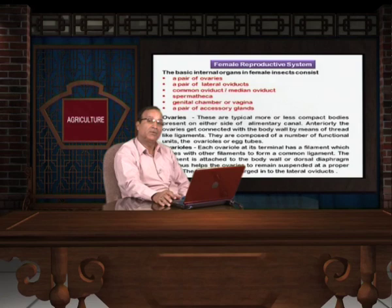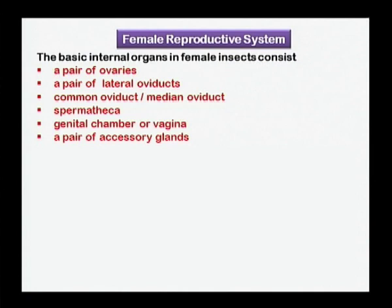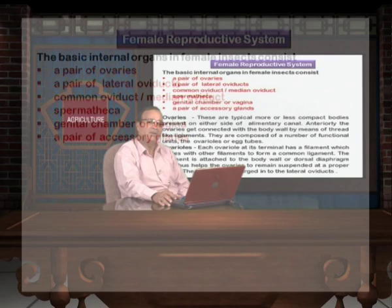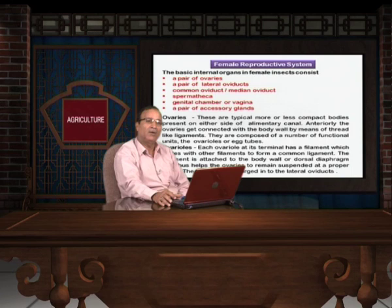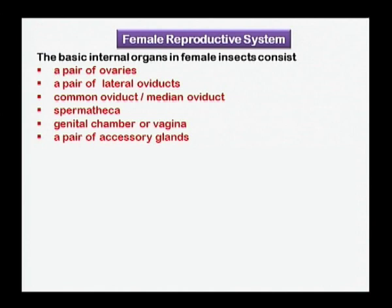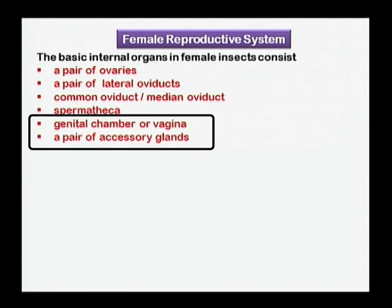Now, if we talk about the female reproductive system, it consists of a pair of ovaries, a pair of oviducts, then a common oviduct, and spermatheca. The spermatheca are organs in the female system used for storing sperms at the time of copulation. Besides these structures, the genital chamber or vagina is also a part of the female reproductive system, and this system is assisted by a pair of accessory glands.